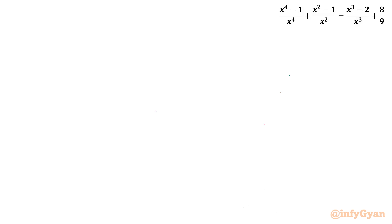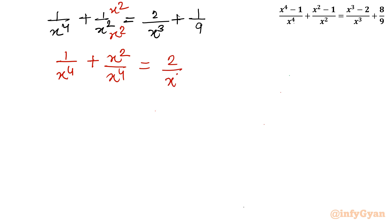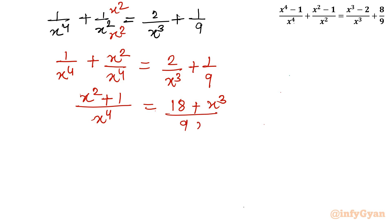The equation is 1 over x⁴ plus 1 over x² equals 2 over x³ plus 1 over 9. I will multiply the second term on the left by x² over x², so it becomes x² over x⁴. The left hand side is now (x² + 1) over x⁴. On the right, cross-multiplying gives (18 + x³) over 9x³. We can cancel x³ on both sides.